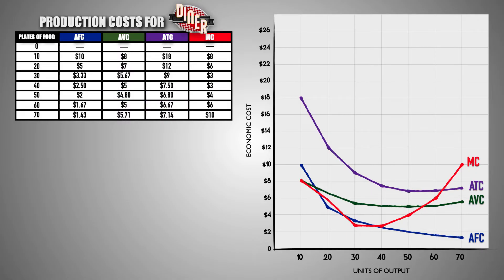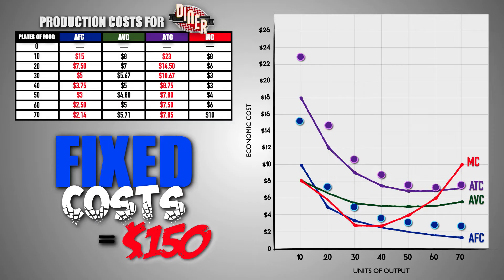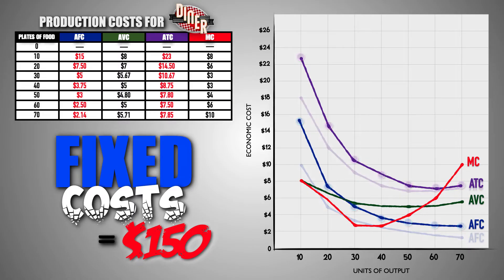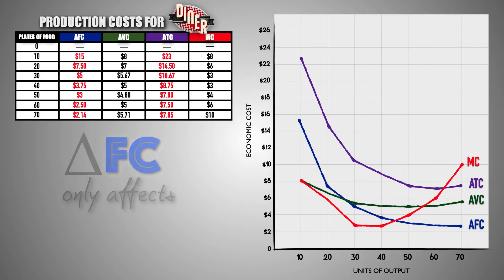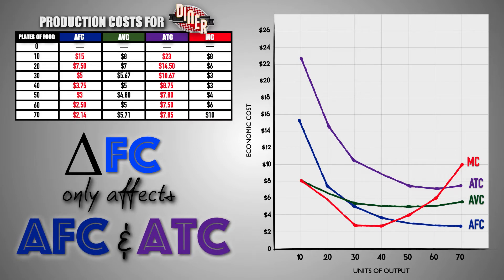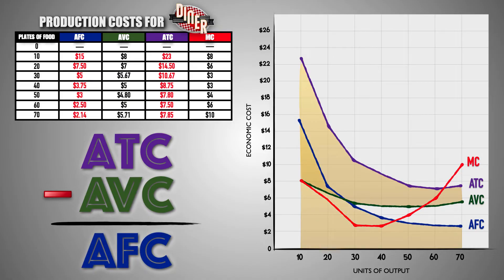When changes occur in a firm's per unit production costs, the firm's per unit cost curves will shift to visualize those changes. Let's go back to when the diner's fixed production costs increased to $150. This $50 increase in fixed costs will drive up the diner's fixed cost and total costs per meal at every output level. We can visualize these changes in per unit production costs by plotting the diner's new average fixed cost and average total cost at each level of output and connecting these points with a curve. Essentially, the increase in fixed costs is represented by a shift upward in the AFC and ATC curves. Notice that the AVC curve did not shift because a change in fixed costs only impacts the AFC curve and ATC curve. Also notice that the space between the AVC and the ATC curves grew larger due to an increase in the average fixed cost at every level of output.